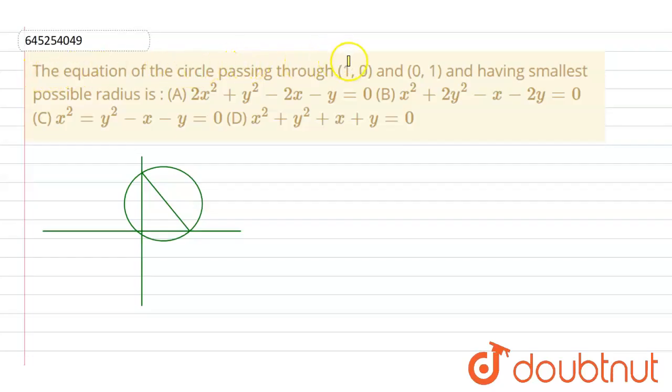The equation of circle passing through point (1,0) and (0,1) and having smallest possible radius. Now see, in this question we need to find equation of circle passing through these two points and having smallest possible radius. Let us consider that this is our point (0,1) and this will be our point (1,0). These are our two points.